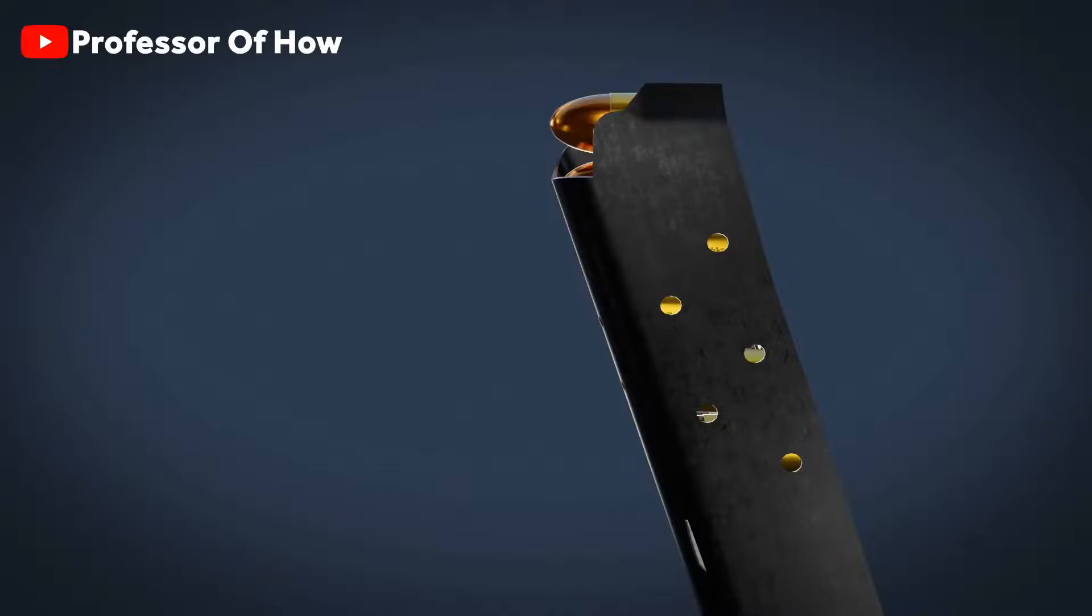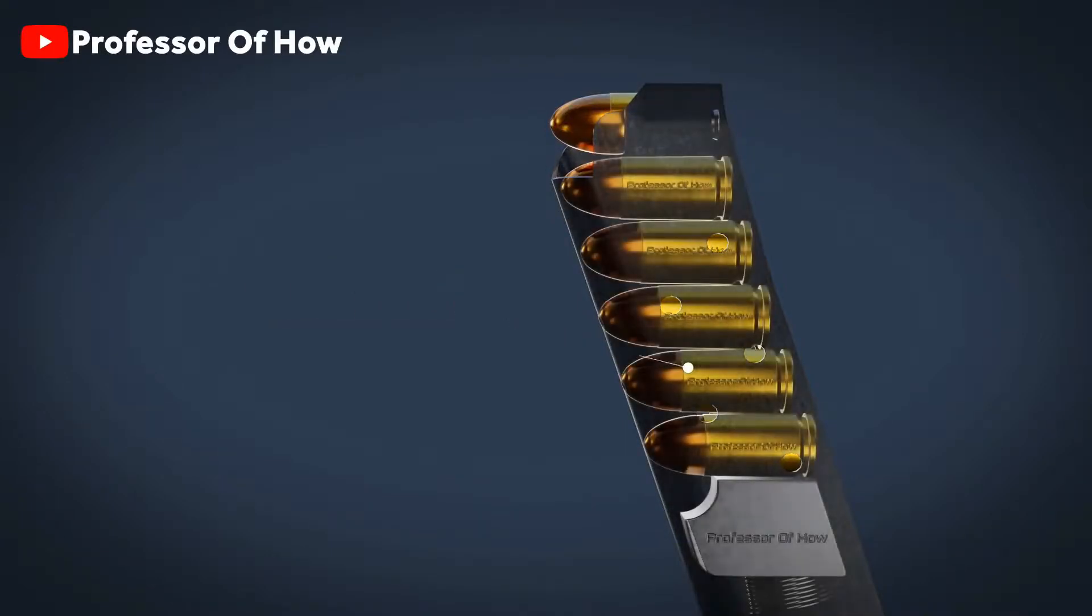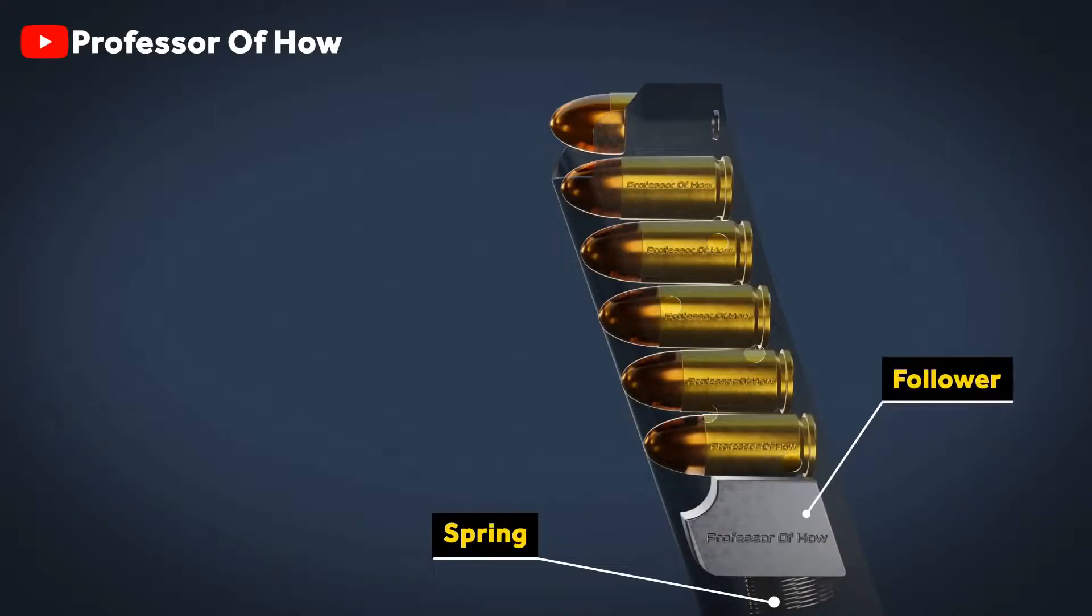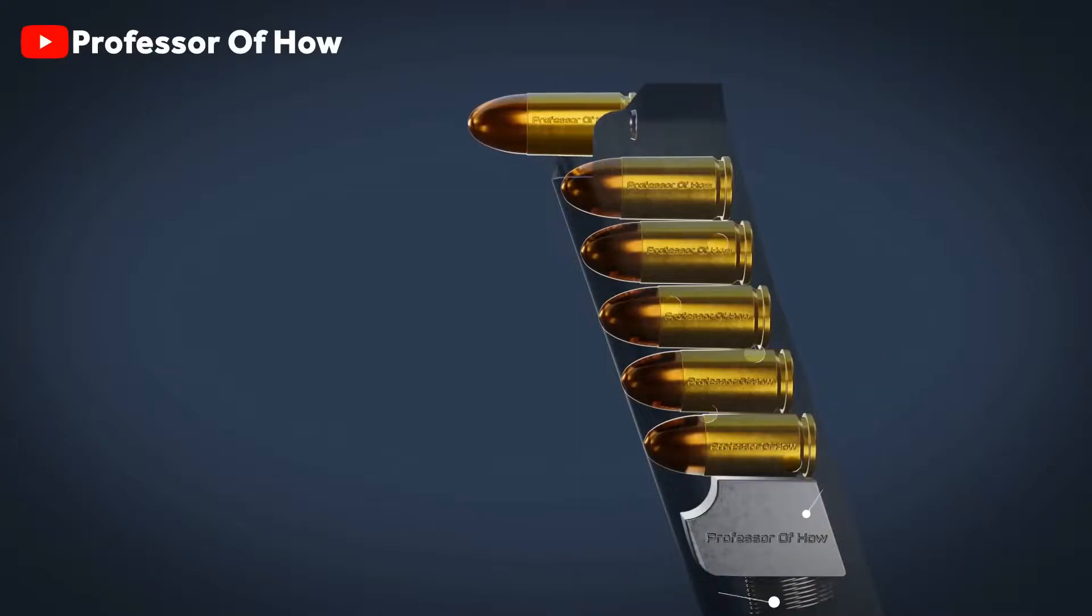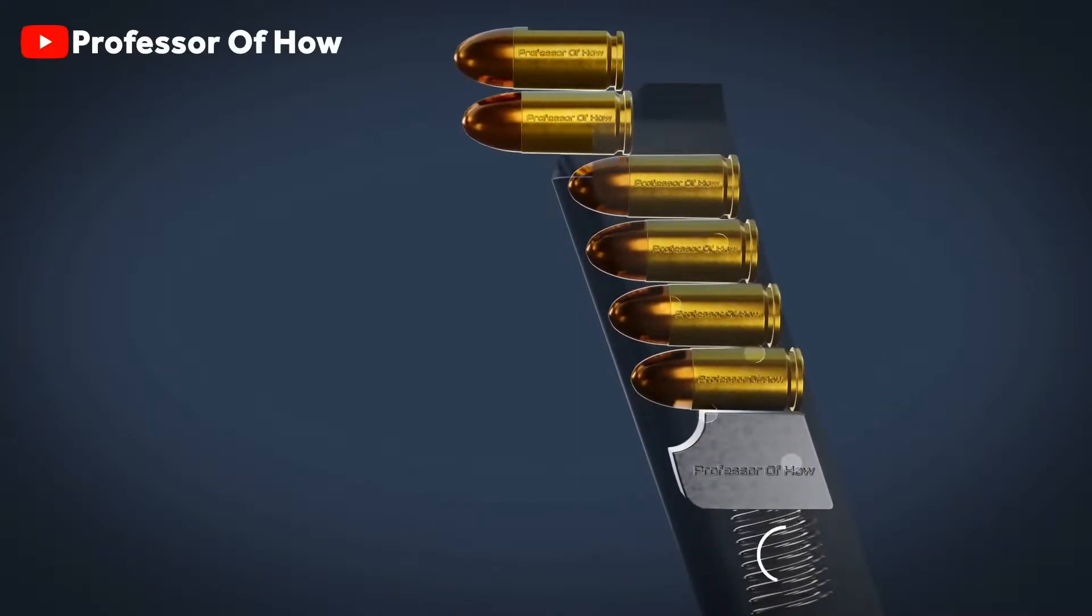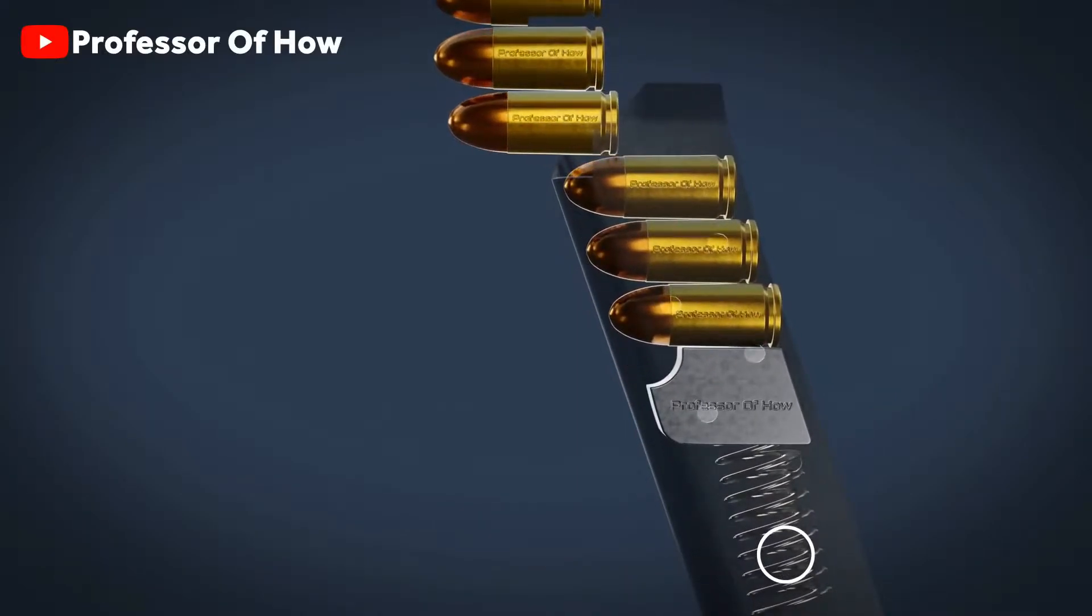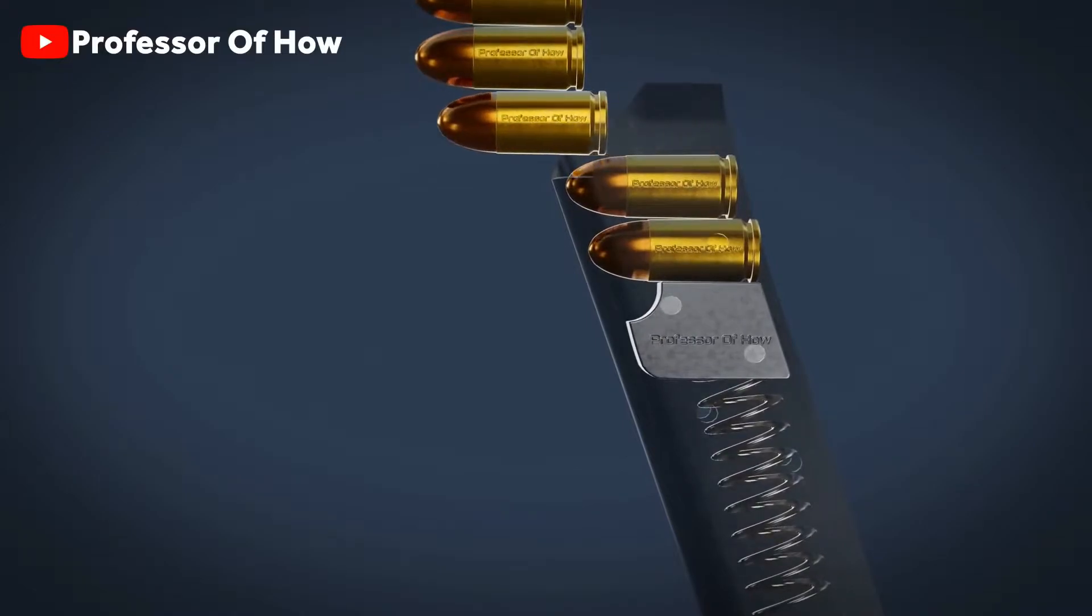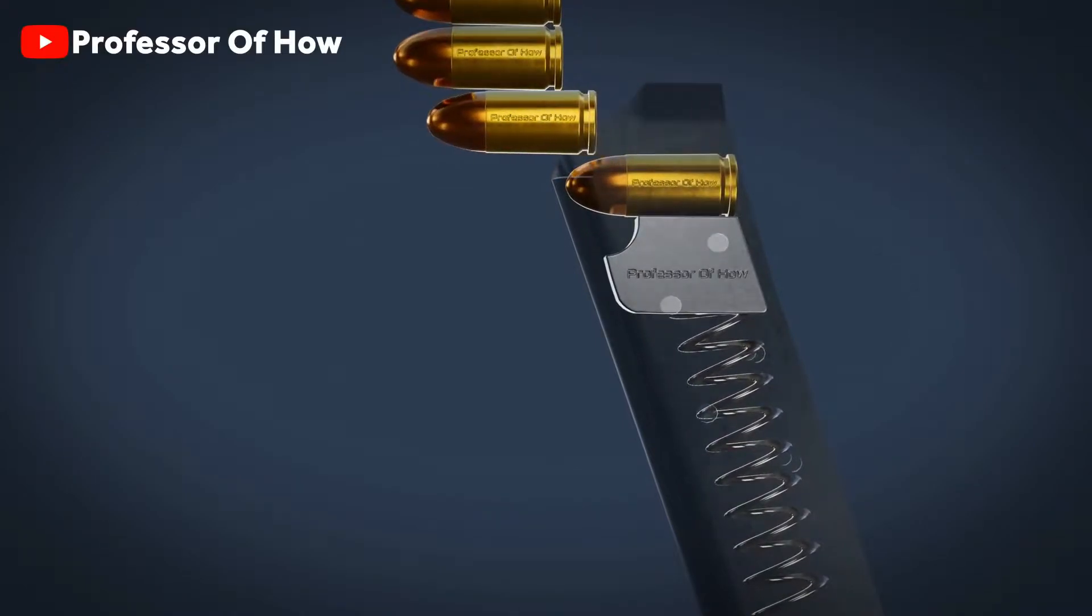This third action can be understood as, this is a magazine cover, inside of it is a spring and a follower. The magazine is designed in such a manner that the cartridge can come out only after sliding. The use of this spring is to push all the cartridges to the top, which are present above the follower, like this.